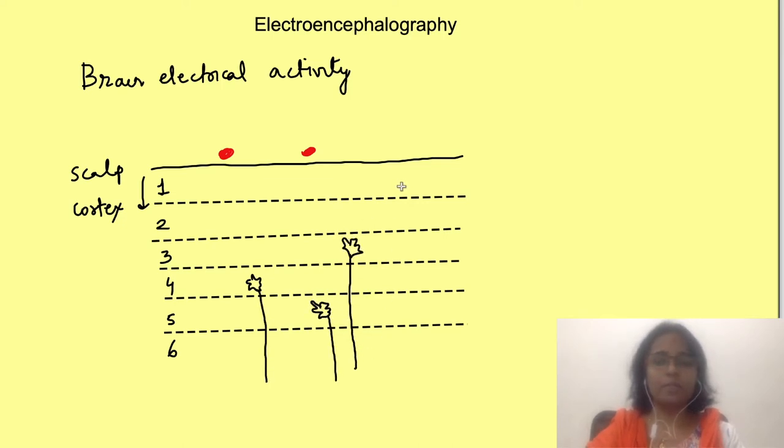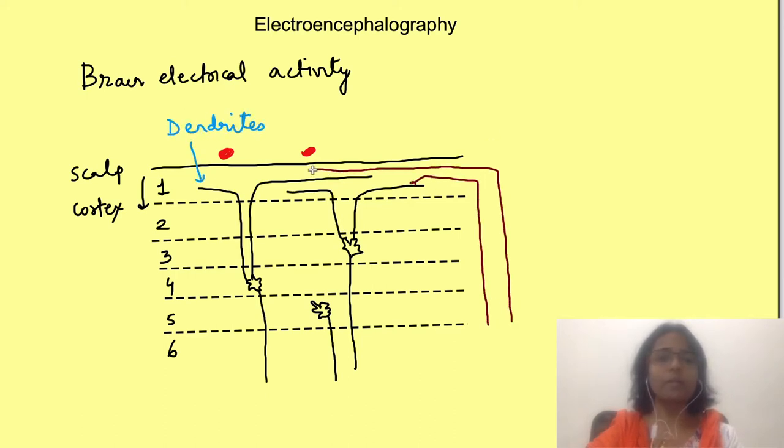This first layer, the molecular layer, has very few cell bodies. Instead it consists of dendrites of other neurons which synapse with axons of neurons from other areas, especially from non-specific thalamic nuclei.